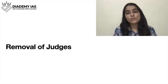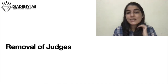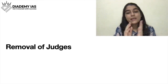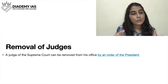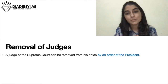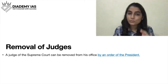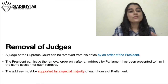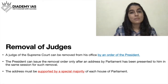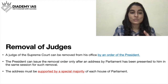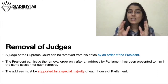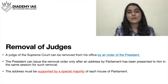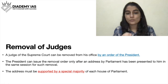Now let us discuss the removal of judges. The removal of judges is done by an order of the President. But the President will give this order only when the removal process has been passed in both houses — Lok Sabha and Rajya Sabha — with a special majority. Only when both houses approve with a special majority will the President order the removal of a judge.